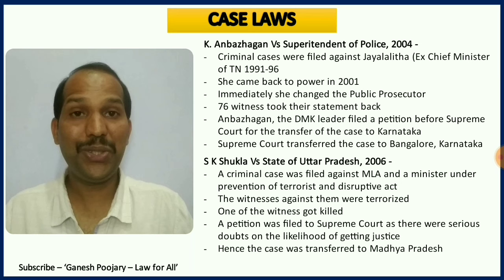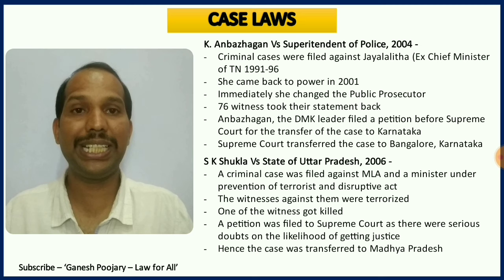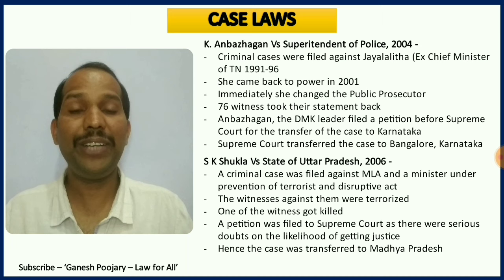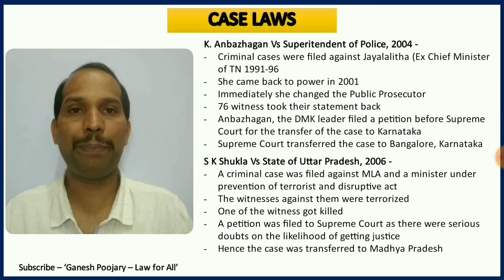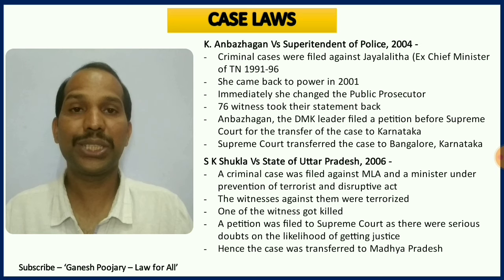There are two very interesting and important case laws pertaining to Chapter 31. The first is K. Annabazigan versus Superintendent of Police. Jay Lalitha was Chief Minister of Tamil Nadu from 1991 to 1996 and then she lost power. Several criminal cases came against her and 76 people gave witness statements. In 2001 she became Chief Minister again, transferred the public prosecutor, and all 76 witnesses retracted their statements. Annabazigan petitioned the Supreme Court stating the case was not proceeding properly, and the Supreme Court, also finding that things were not going right, transferred the case from Tamil Nadu to Karnataka, that is to Bangalore.